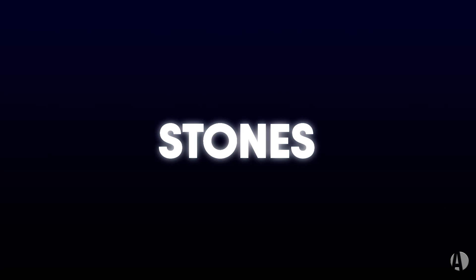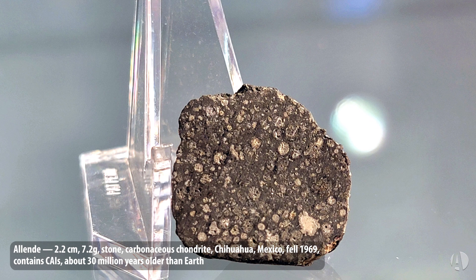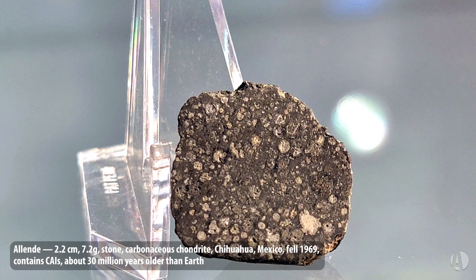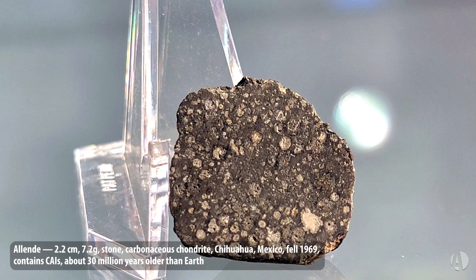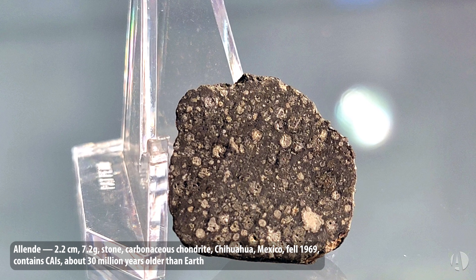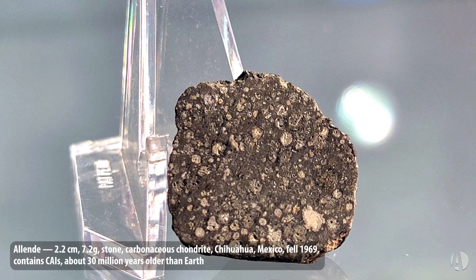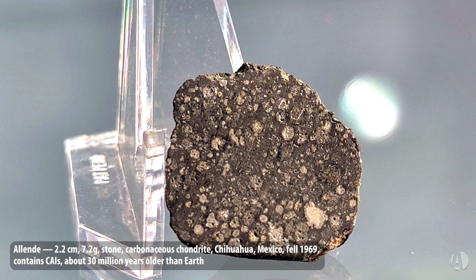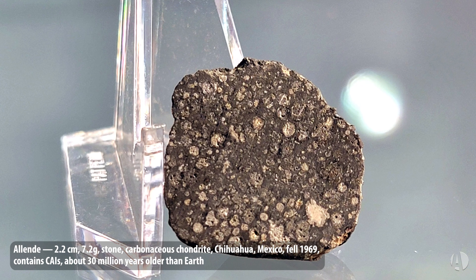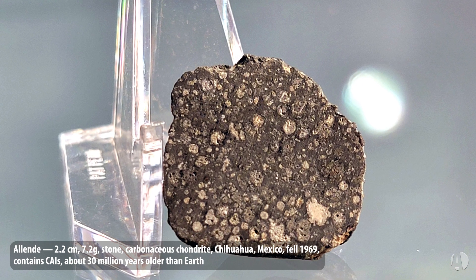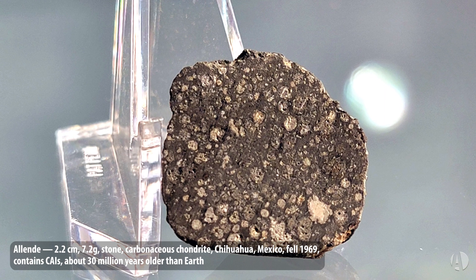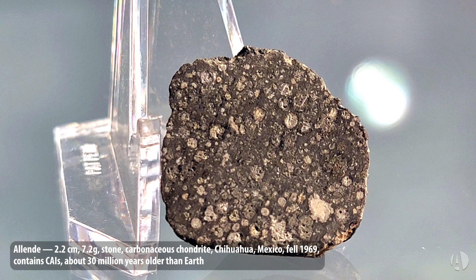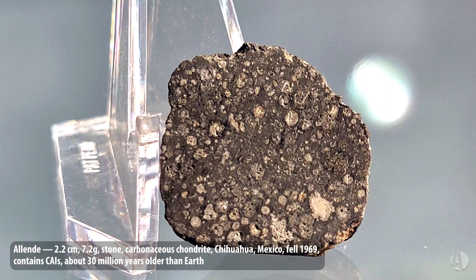The most abundant category by far of meteorites are the stones. One great exotic example is Allende — a carbonaceous chondrite from the distant solar system, very primitive stuff. It fell in Chihuahua, Mexico in 1969. It contains really unusual inclusions called calcium-aluminum inclusions, these white spots that are about 30 million years older than Earth, representing the crystallized primitive droplets of material in the early solar system.